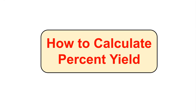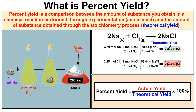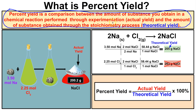This is Mr. Millings and in this video we are going to learn how to calculate percent yield. Percent yield is a comparison between the amount of substance that you obtain in a chemical reaction performed through experimentation, which is called the actual yield, and the amount of substance obtained through the stoichiometry process, which is called the theoretical yield.